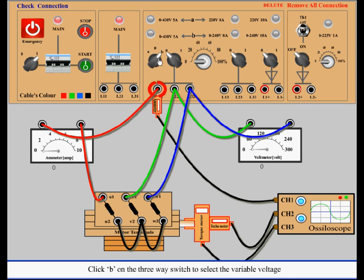Click B on the three-way switch to select the variable voltage. Select one on the next two-way switch. Select voltage with the voltage regulator knob. Note the readings of voltmeter and ammeter.